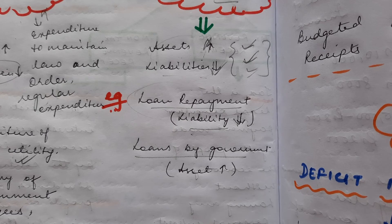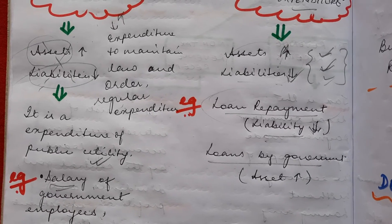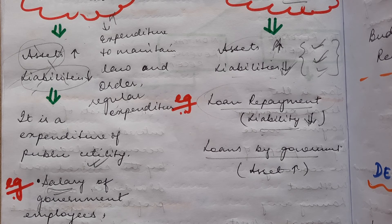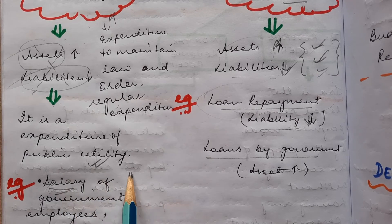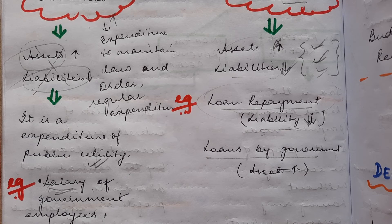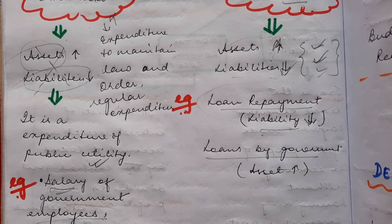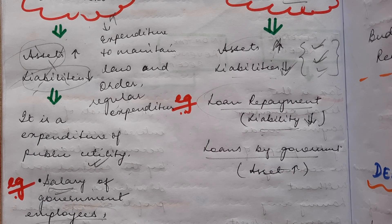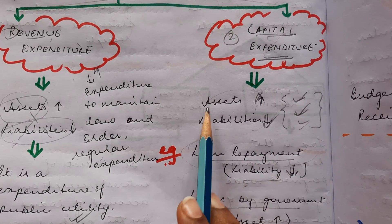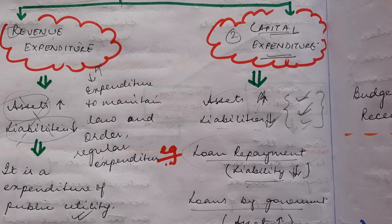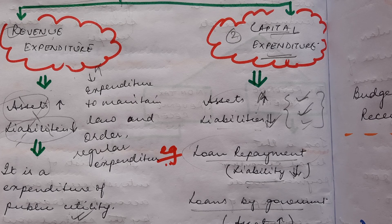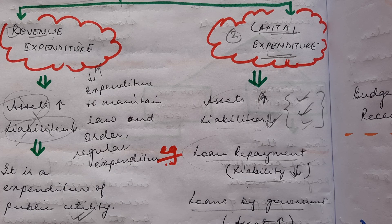In revenue expenditure there is no change in the assets and liabilities, but it is a recurring expenditure that has to be done — like salary, which the government has to pay for its employees every month. On the other hand, capital expenditure involves a change in the liability or asset position — for example, loan repayment decreases liabilities, and giving loans increases assets. These are the basic differences between revenue expenditure and capital expenditure.